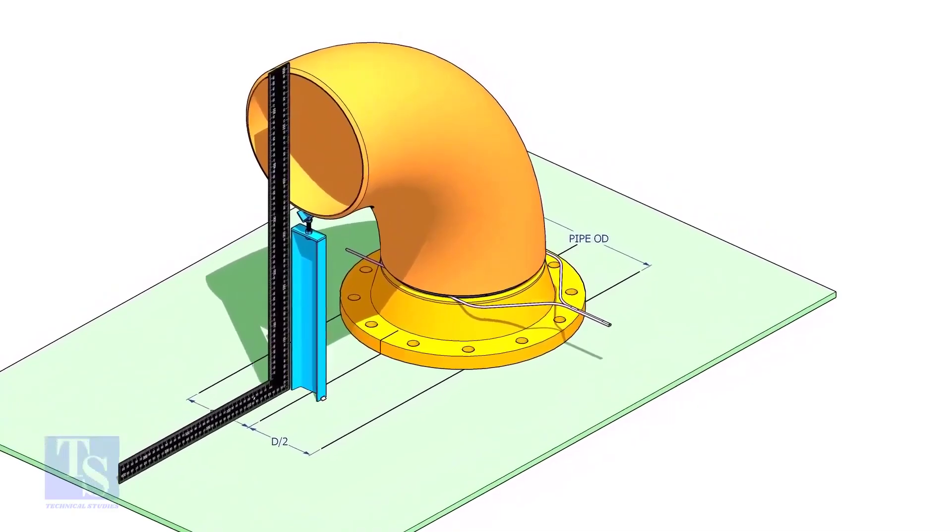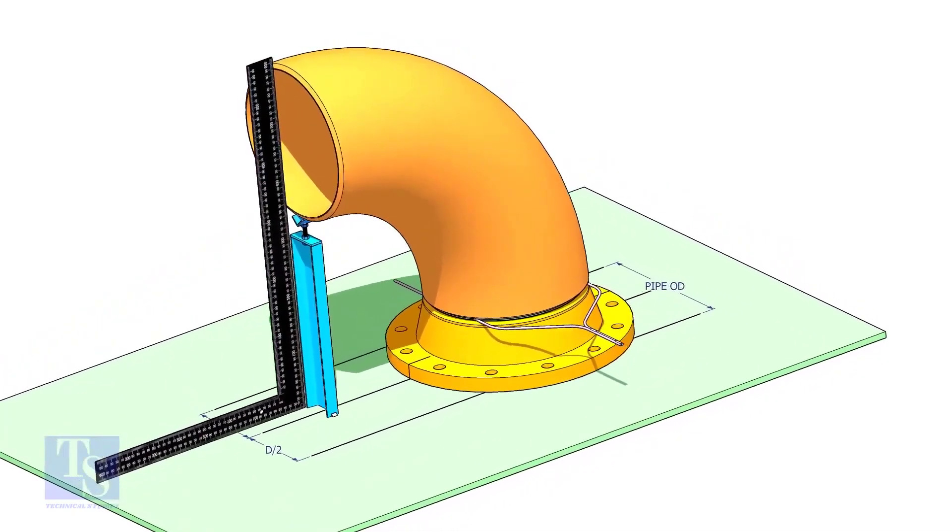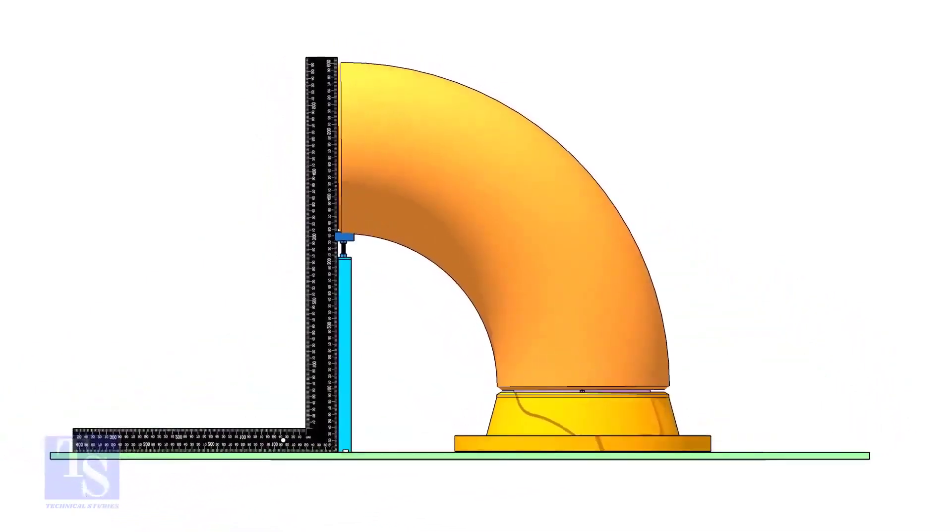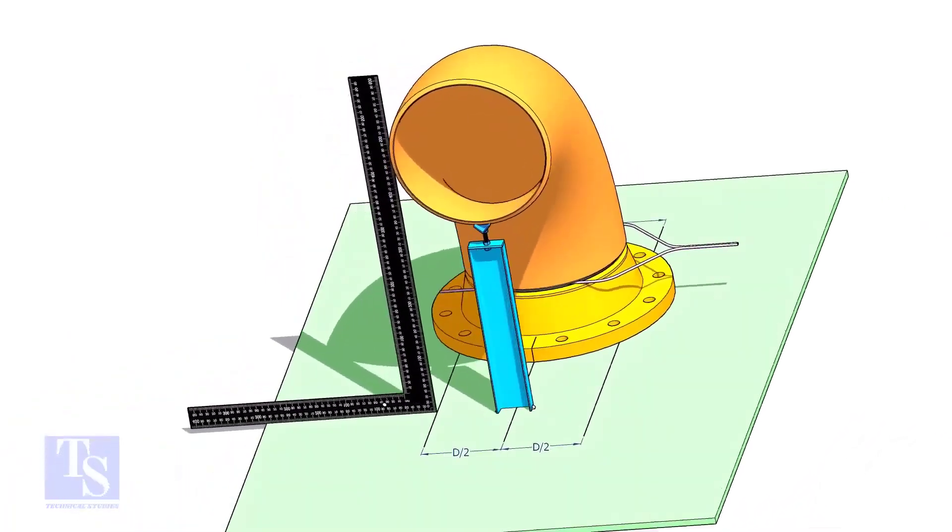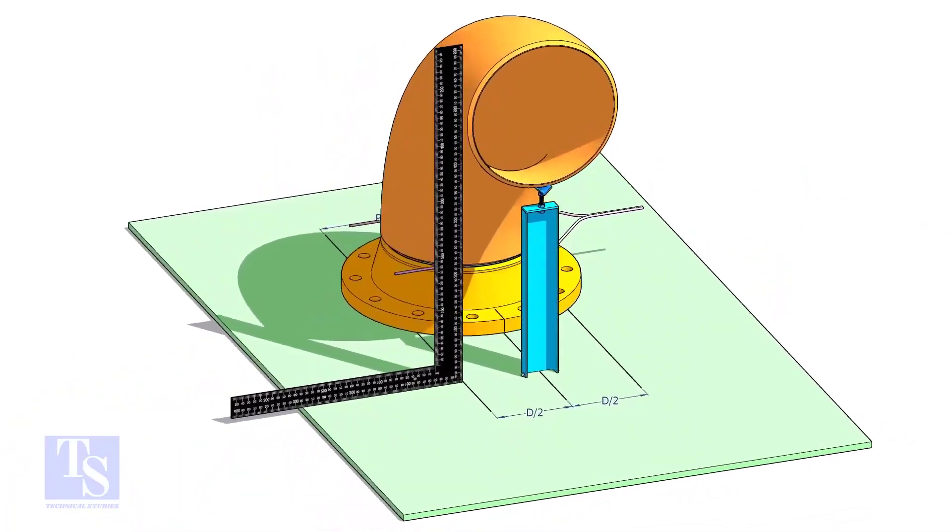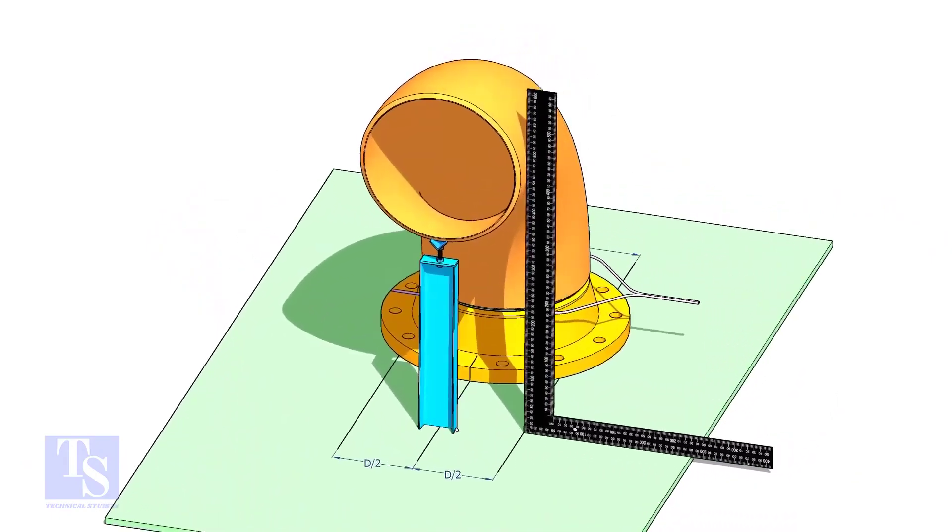Make the squareness of the elbow to the plate. The straightness of the plate is a must. Make sure the face of the elbow and the lines are parallel.